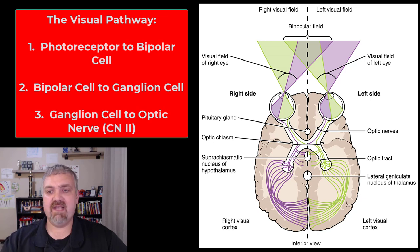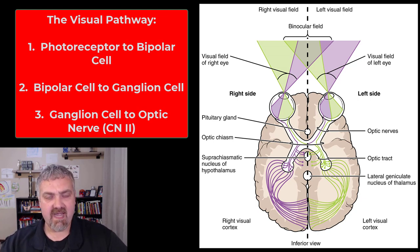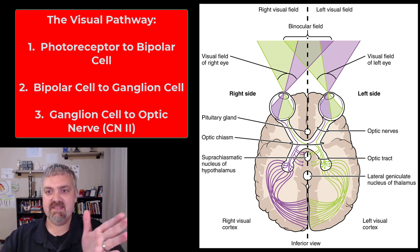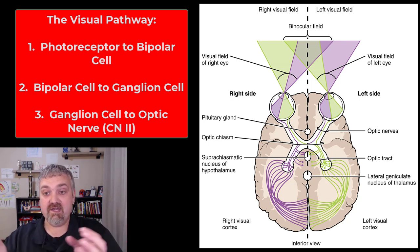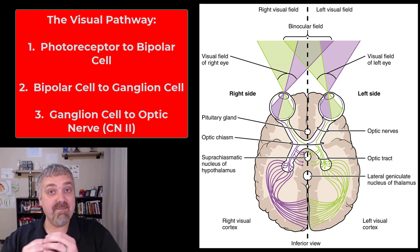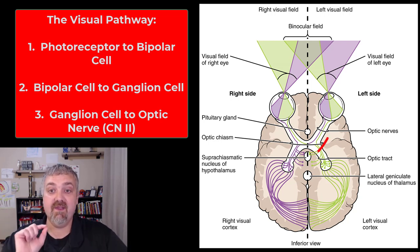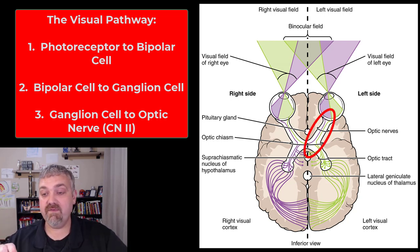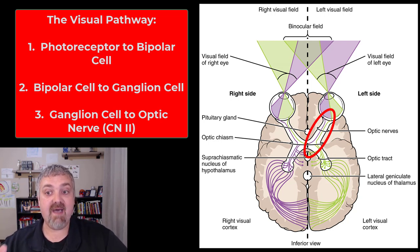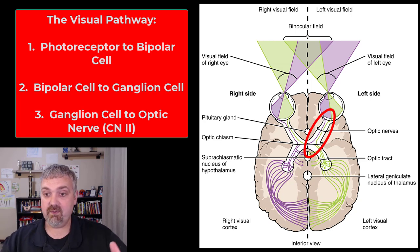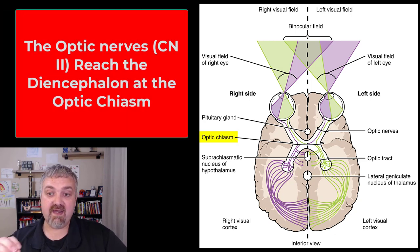This message has to cross those two synapses — from the rods and cones to the bipolar cells to the ganglion cells. These ganglion cells are going to converge on the optic disc, which is called your blind spot because there are no photoreceptors there. They'll travel through the wall of the eye and proceed as cranial nerve 2, the optic nerve.